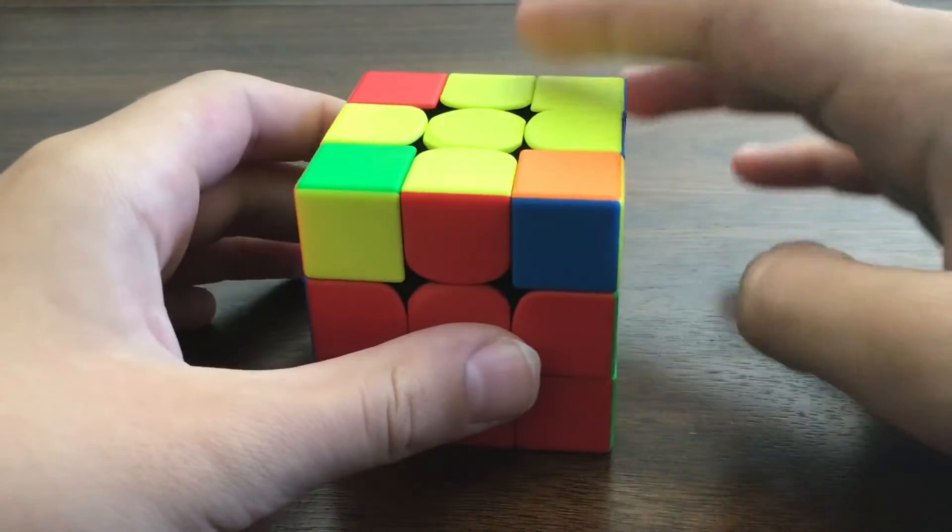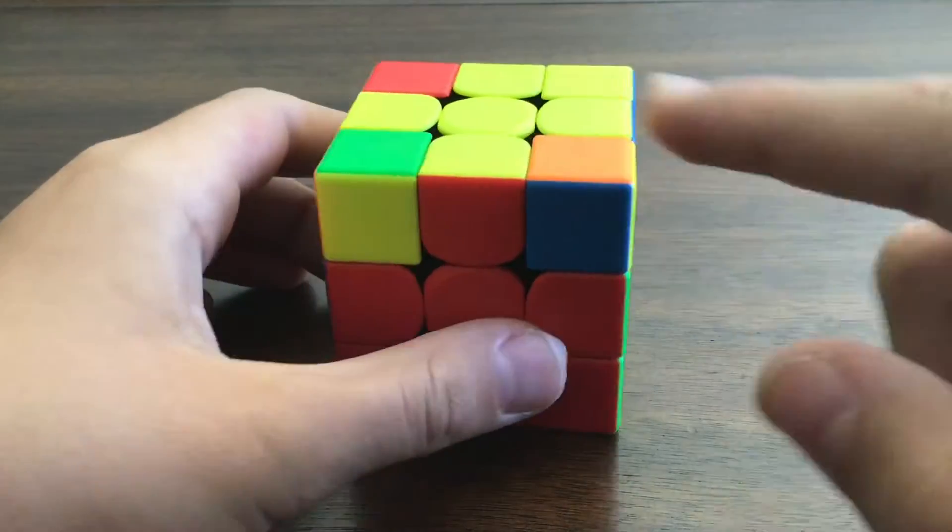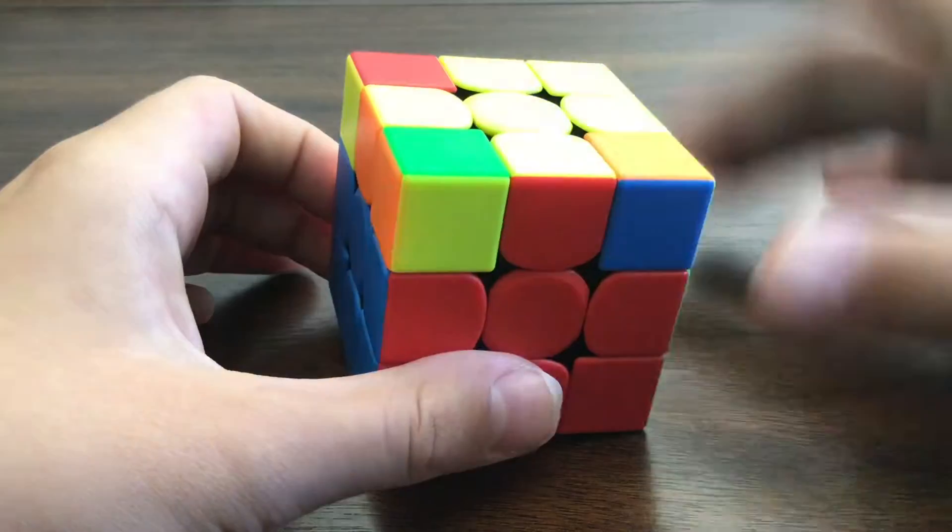For the second one, you're going to have the big block on the top right, a yellow piece on the right, front, and left.